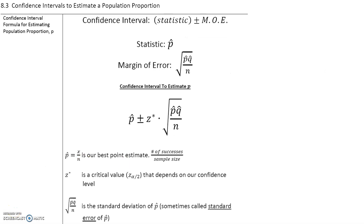In this section, we will talk about confidence intervals, but to estimate a population proportion, unlike in the previous sections when we estimated a population mean.